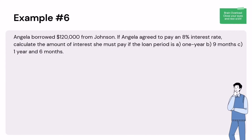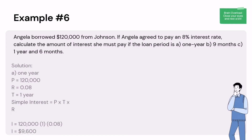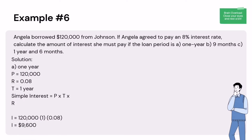Example 6: Angela borrowed $120,000 from Johnson. If Angela agreed to pay an 8% interest rate, calculate the amount of interest she must pay if the loan period is: A) 1 year, B) 9 months, C) 1 year and 6 months. Solution A — 1 year: P = $120,000, rate = 0.08, time = 1 year. Using SI = P × T × R: 120,000 × 1 × 0.08 = $9,600. Angela will pay $9,600 in one year.